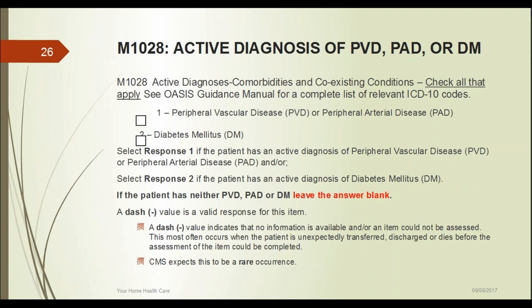Select response 1 if the patient has active peripheral vascular disease or peripheral arterial disease. Select response 2 if the patient has an active diagnosis of diabetes. If the patient has neither PVD, PAD, nor DM, just leave it blank — you can put a dash. This is something new with OASIS-C2: they now have the option of putting dashes in questions. For instance, if you were in a patient's home filling out an assessment and had to transfer them to the hospital before completing all questions, you would put a dash in unanswered items.